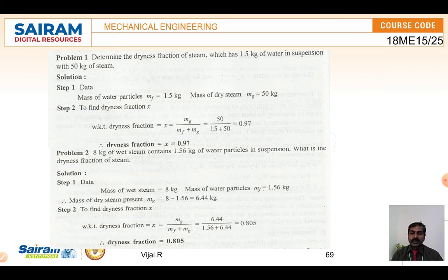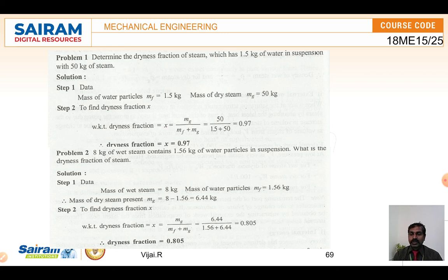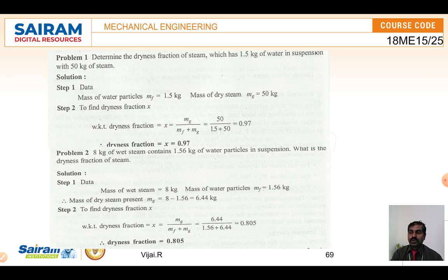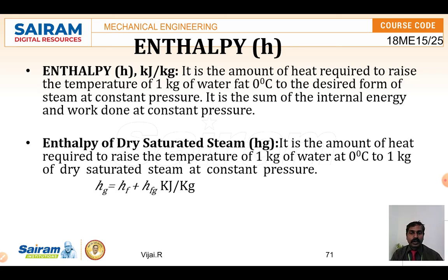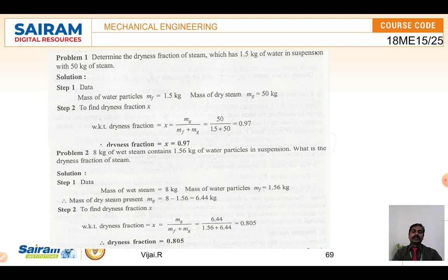Another problem: 8 kg of wet steam contains 1.56 kg of water particles — what is the dryness fraction? Data given: mass of wet steam = 8 kg, mass of water particle mf = 1.56 kg. Mass of dry steam mg = 8 − 1.56 = 6.44 kg. Using x = mg / (mf + mg): x = 6.44 / (1.56 + 6.44) = 0.805. So the dryness fraction is 0.805, indicating wet steam. By using the dryness fraction we can determine whether steam is wet or dry.